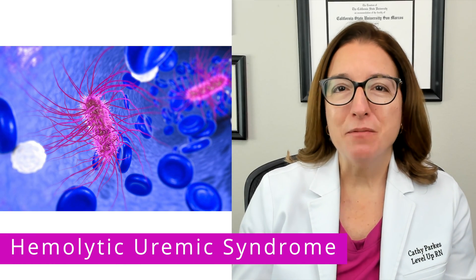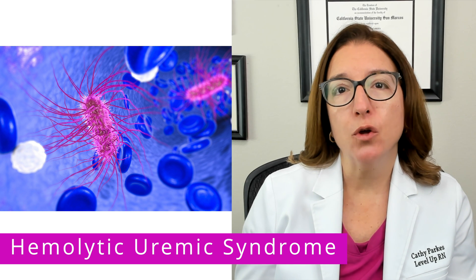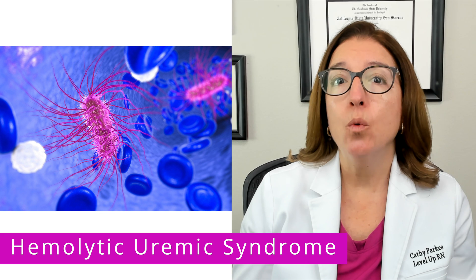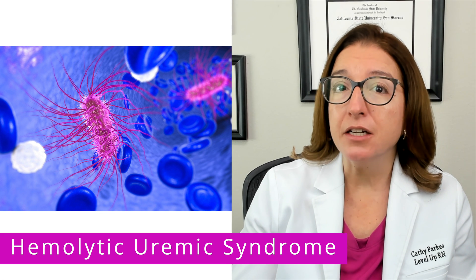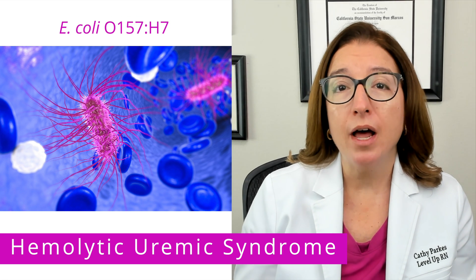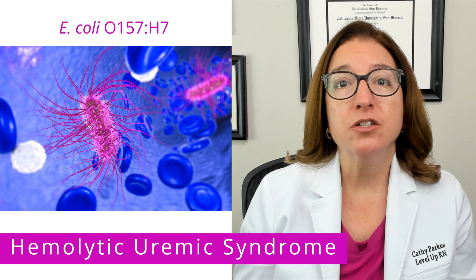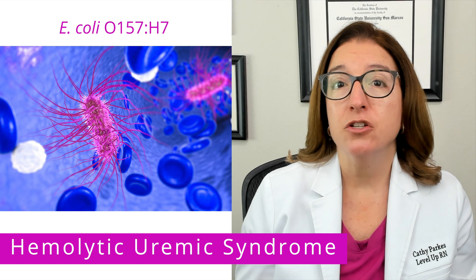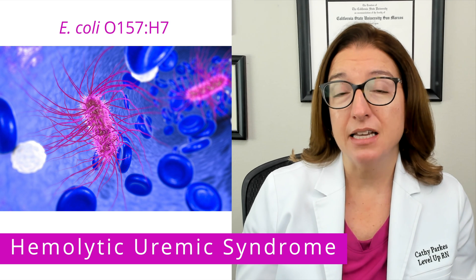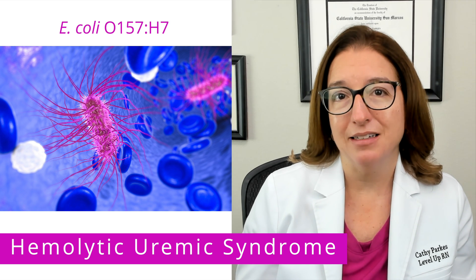Hemolytic uremic syndrome is a disorder that is most commonly the result of a gastrointestinal infection with a particular strain of E. coli. This strain of E. coli produces a toxin which causes the destruction of red blood cells, damage to the blood vessels in the kidneys, and a decrease in platelets.